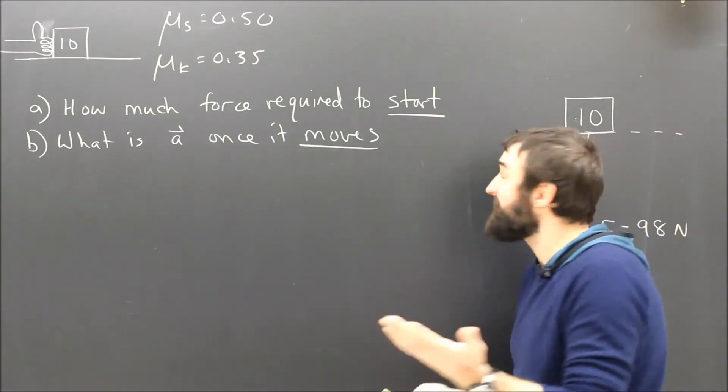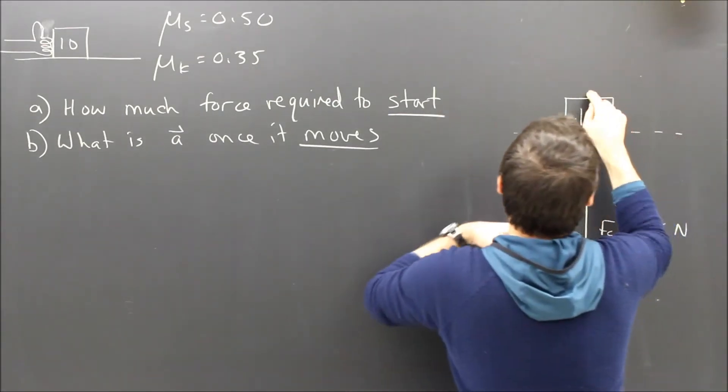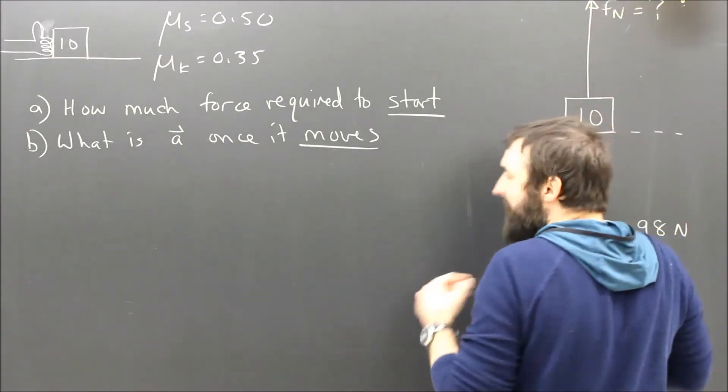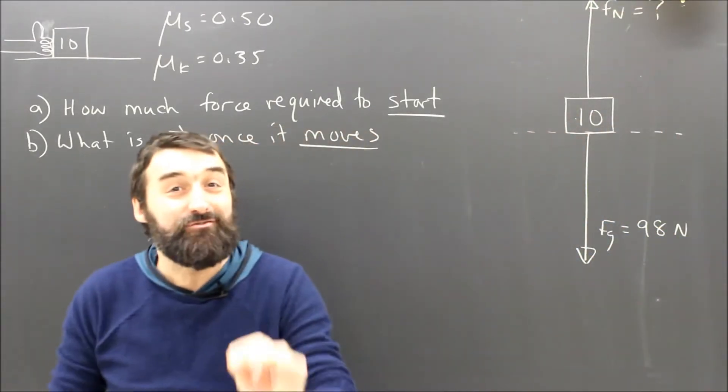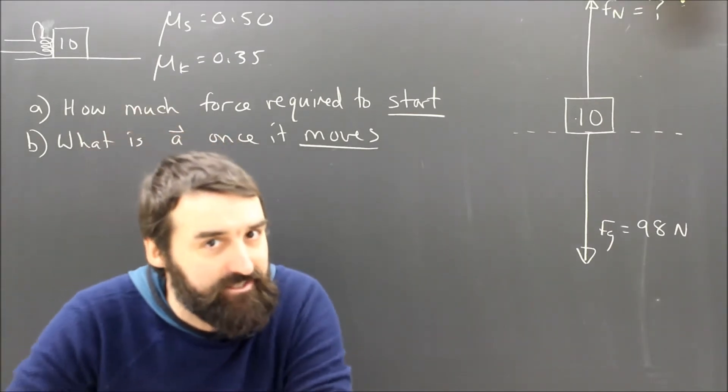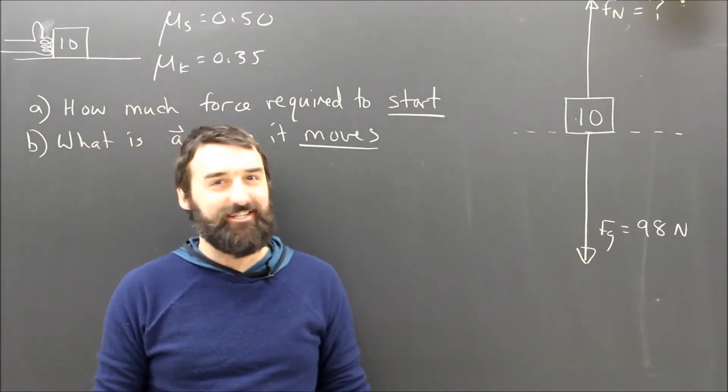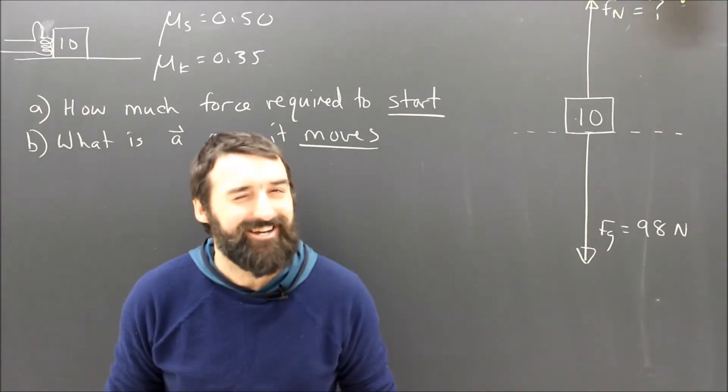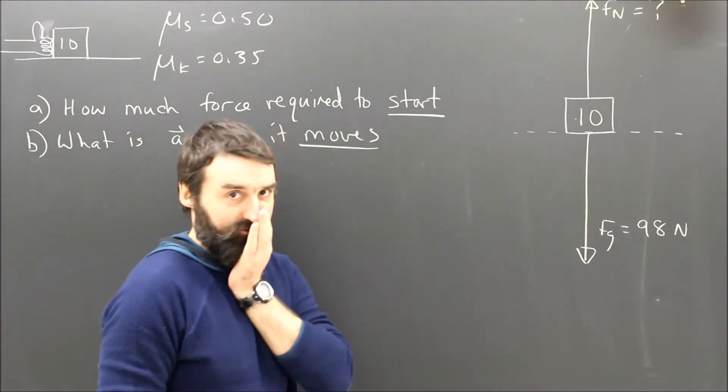Is this thing resting on a surface? It is. So that means there must be normal force perpendicular to the surface. I'm going to call that Fn and put a question mark there because I do not know how big Fn is yet. And I am not one of those silly people who just assumes that Fn is equal to Fg because it does not always, even if sometimes it does.